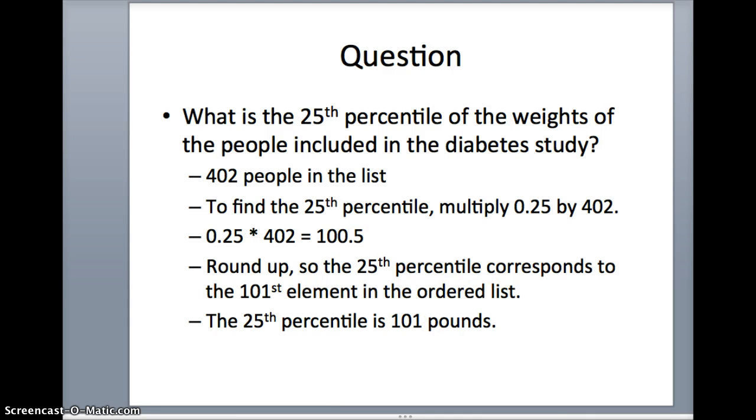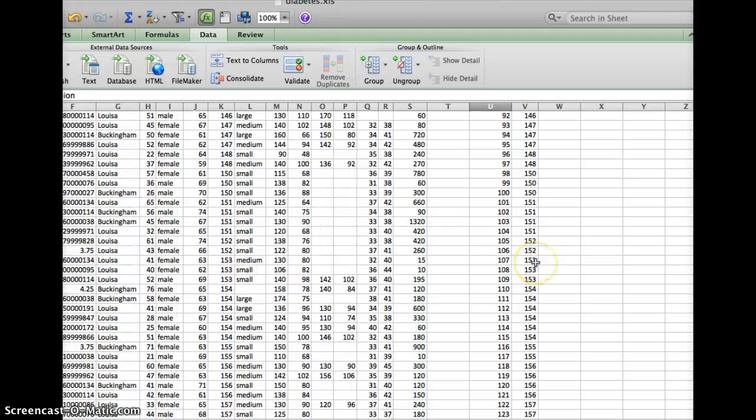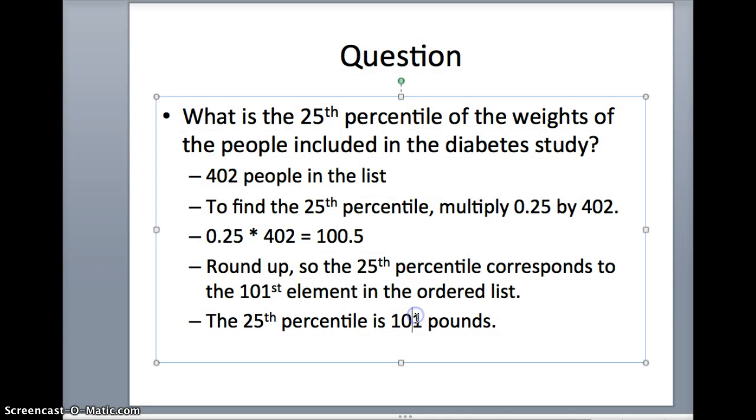Let's see what the 101st element is. The 101st element is 151. Let's go back and fix that on the slide. The 101st element is 151 pounds, not 101 pounds. When we got to the 101st element, we saw that it was 151 pounds, and that will correspond to the 25th percentile.